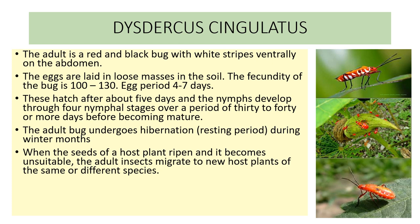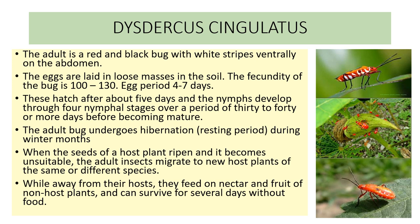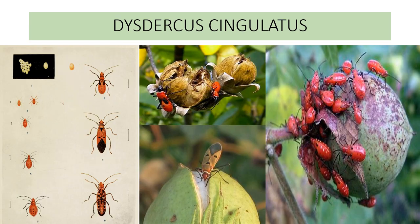When the seeds of the host plant ripen and become unsuitable, the adult insects migrate to new host plants of the same or different species. While away from their host, they feed on nectar and fruits of non-host plants and can survive for several days without food. The life cycle includes egg and nymph stages; the nymph is a miniature of the adult without wings and without gonads, and is smaller in size. There are about 4 to 5 nymphal stages. In this picture, you can see the egg, the nymphs, and the adults.